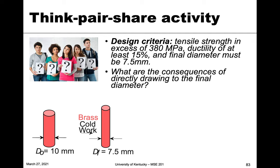The first step is to look at going from the original to the final diameter and see what the consequences are. Just like in the previous example on cold work, calculate the amount of cold work, get the properties from the figures, and see what the tensile strength and ductility would be if we go from 10 to 7.5 millimeters in diameter. Pause the video, go to the quiz, answer that question, then come back.